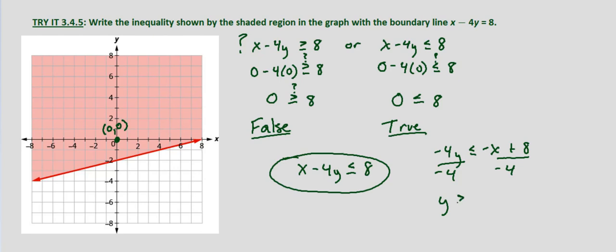So y is greater than or equal to 1/4x minus 2, since negative 8 divided by negative 4 gives us positive 2. That matches our boundary line because we have a y-intercept of negative 2 and a slope of 1/4.